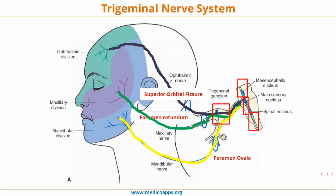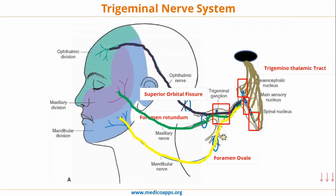The main sensory nucleus and the spinal nucleus are associated with general sensations, whereas the mesencephalic nucleus is specifically associated with proprioception. From these three main nuclei, fibers originate and end up in the thalamus — this pathway is called the trigeminothalamic tract. That covers the sensory nerve components of the trigeminal nerve system.